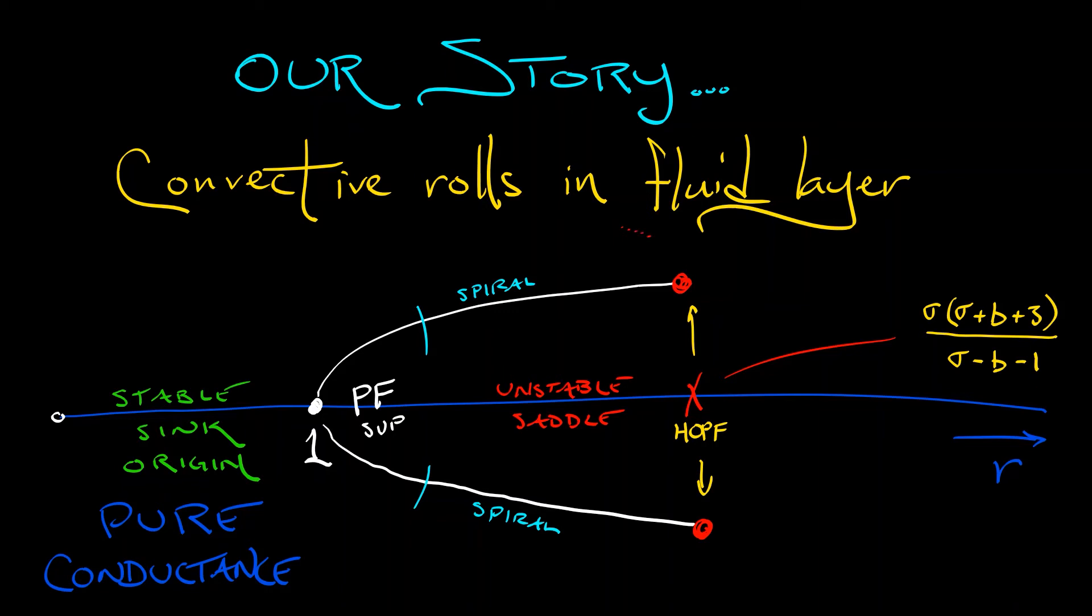And because this is a subcritical Hopf, that means that there are unstable limit cycles to the left of this bifurcation. This Hopf bifurcation is where those unstable limit cycles collapse into the equilibria and die. Now, this is a bit disconcerting because where did those unstable limit cycles come from? And what's happening now?